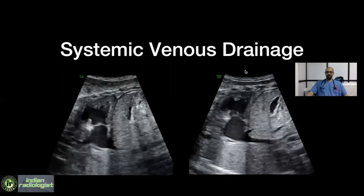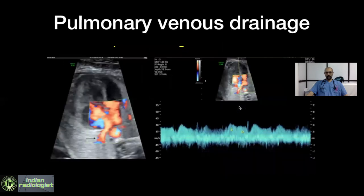We also took a look at the systemic and pulmonary venous drainage, which were normal. In the first image, we can see a bicaval view, and in the second image, we can see an intact IVC. For pulmonary venous drainage, we can see two pulmonary veins draining into the LA.